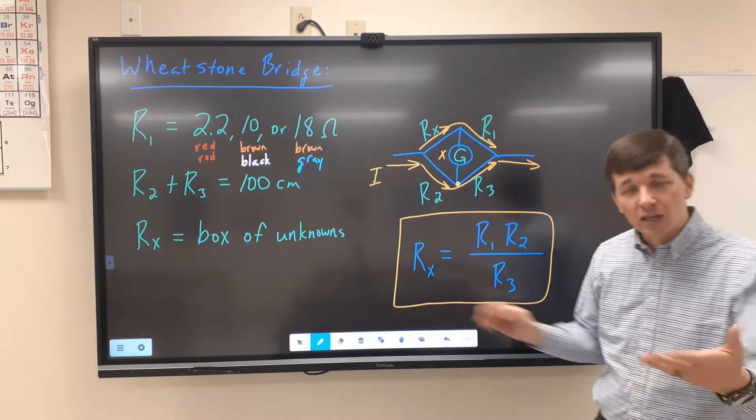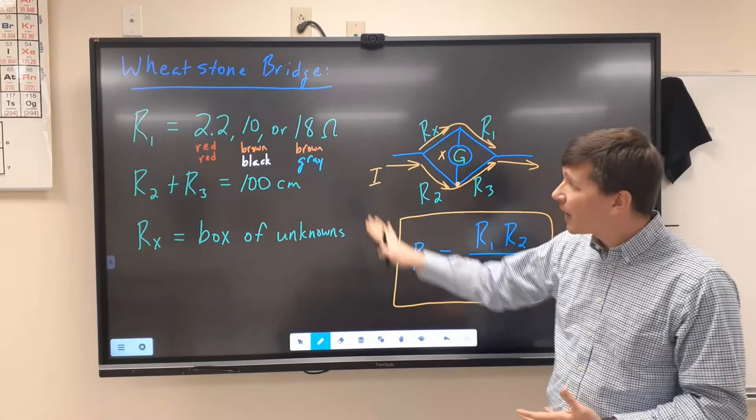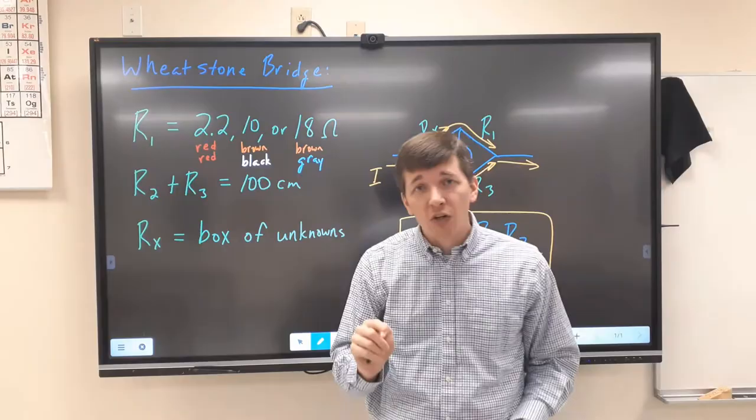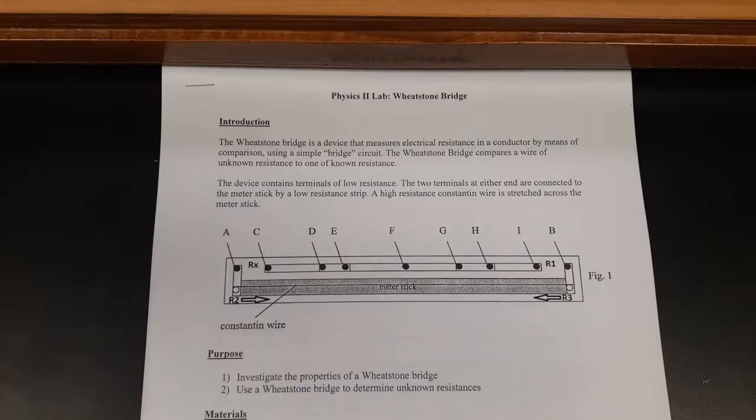At that point, everything is in balance and we can solve for Rx. The formula is in your lab handout: Rx is equal to R1 times R2 divided by R3. That's the background on how these things work and the math you're going to be using. Now let me show you all the materials and how to set it all up.